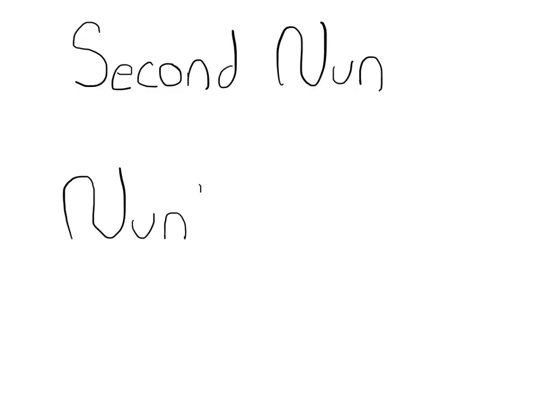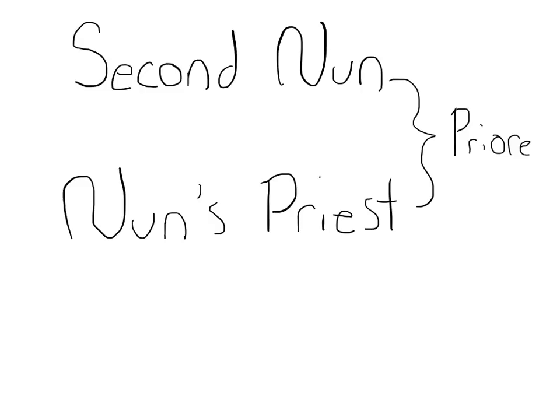The next characters are the second nun and the nun's priest. There's really not too much to say about them, because the entire passage reads: 'Another nun, the chaplain at her cell, was riding with her and a priest as well.' That's it. All we know is that these two people are riding with the prioress. The only glimpse we have is of the priest, and that's because he's one of the people who ends up telling a story.